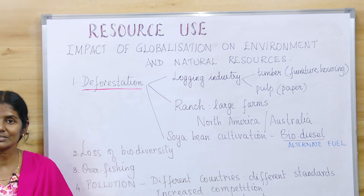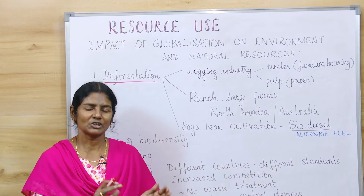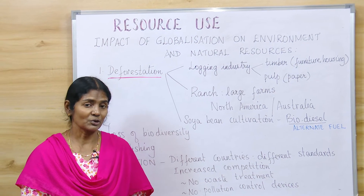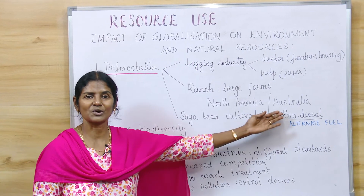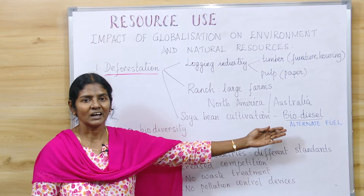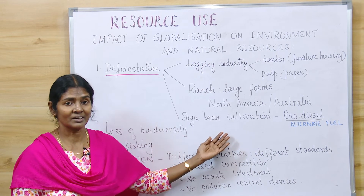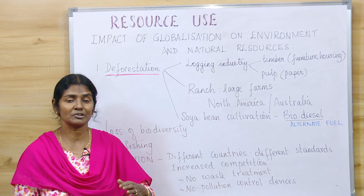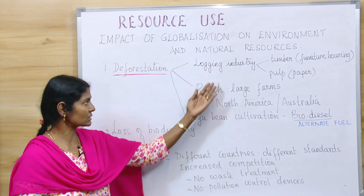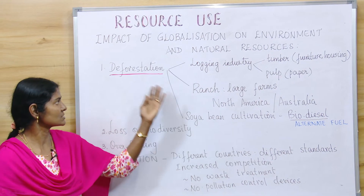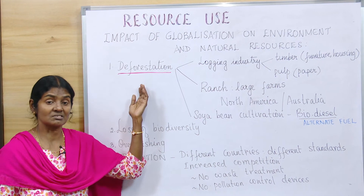The next cause is soya bean cultivation. We speak about renewable resources and alternate fuels — hybrid fuels. Soya bean is one source which forms biodiesel. But to grow soya bean, forests have to be cut down. So these are the three main reasons why deforestation happens.